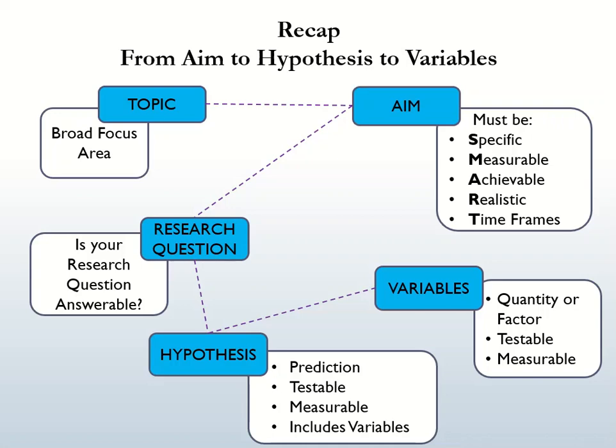Now that you've started your aim, you need to write down your research question. The research question helps you to narrow down and focus your research. When you answer your research question, you should be achieving your aim. You can have more than one research question, but having one will be less complicated. Research questions usually start with 'what' or 'how,' and your research question must not have a yes or no answer.